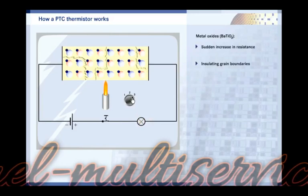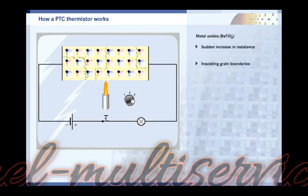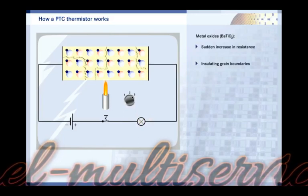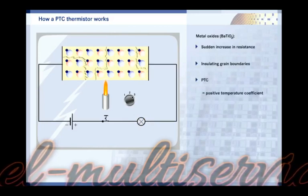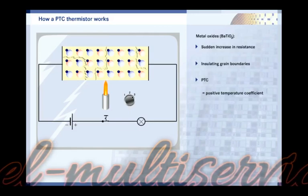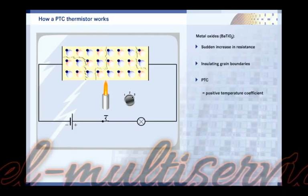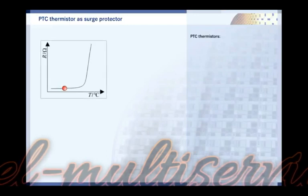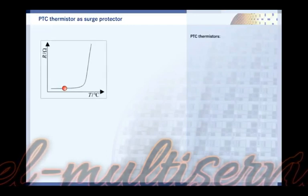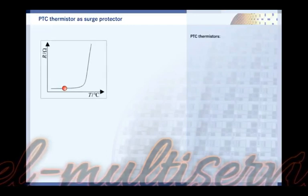At a particular temperature, their resistance suddenly increases thousandfold within a few degrees because insulating grain boundaries form. PTC stands for positive temperature coefficient. The characteristic of PTC thermistors shows how they are suitable as surge protectors.